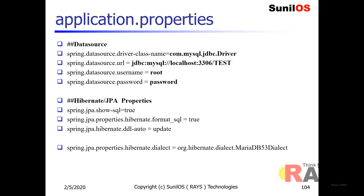Spring Boot is providing application.properties file where you can configure your data source and Hibernate properties. In application.properties file, you can specify your driver name, your database location URL, your database login ID and password.